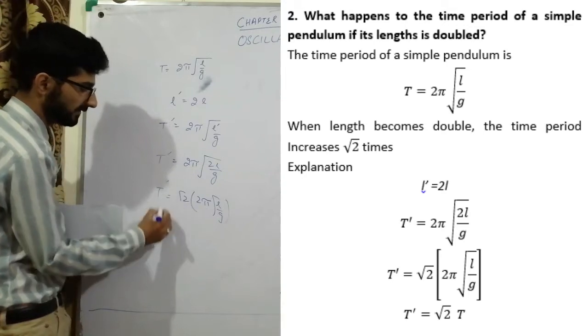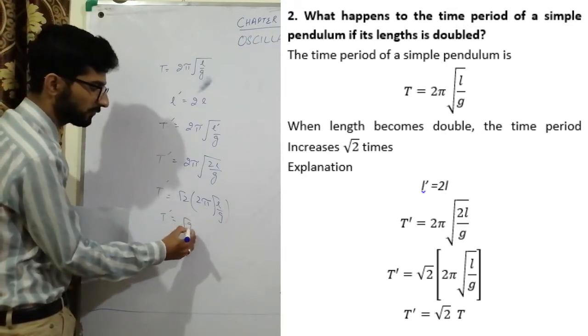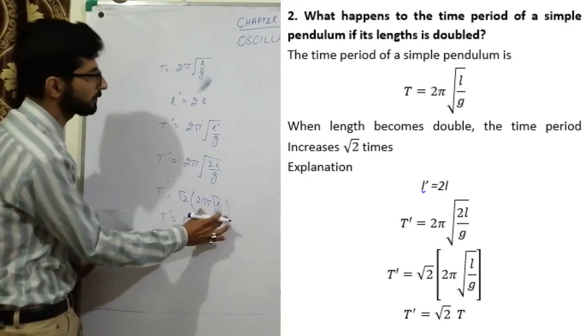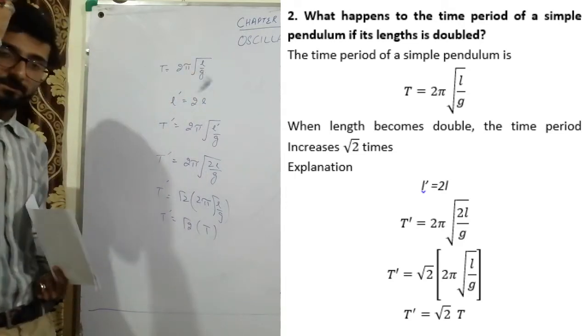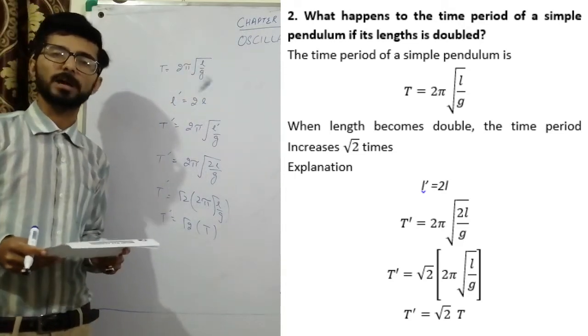T' = √2 × 2π√(l/g), which equals T' = √2 T. This means that the time period increases √2 times.